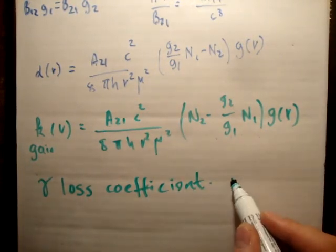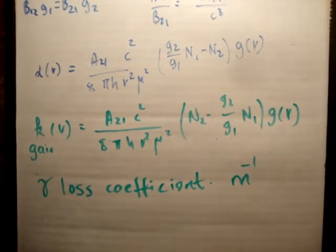And this is just a general loss coefficient. And we're going to say that it happens per meter. Now, this isn't actually the case. These things can happen at specific points in different ways. But we'll approximate all the losses together as having kind of an effect per meter.